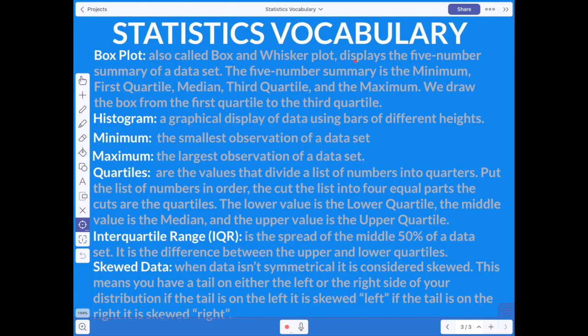The next one is a box plot. It's also called a box and whisker plot, and it displays what we call the five number summary of the data set. And the five number summary is the minimum, the first quartile, the median, the third quartile, and the maximum. And we draw a box around the first quartile to the third quartile, and then the whiskers go out to the minimum and the maximum. Then we have a histogram, and that's a graphical display of data using bars of different heights. And the difference between a histogram and just a typical bar graph is that the histogram bars actually touch each other because the bars represent a range of numbers.